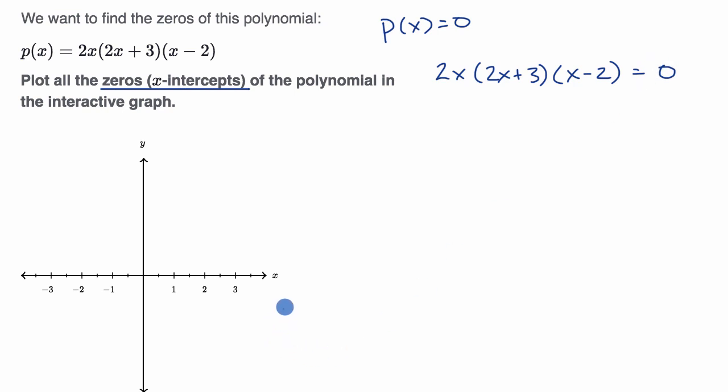Well, as we've talked about in previous videos, if you take the product of things and that equals zero, if any one of those things equals zero, at least one of those things equals zero, it would make the whole product equal to zero.